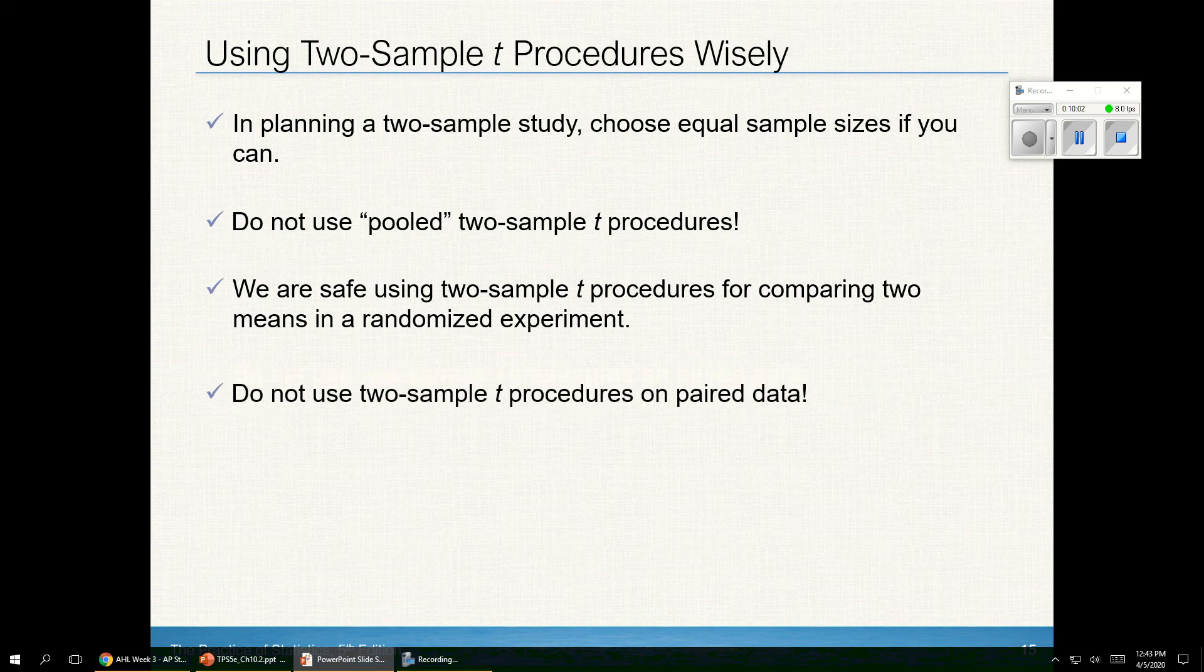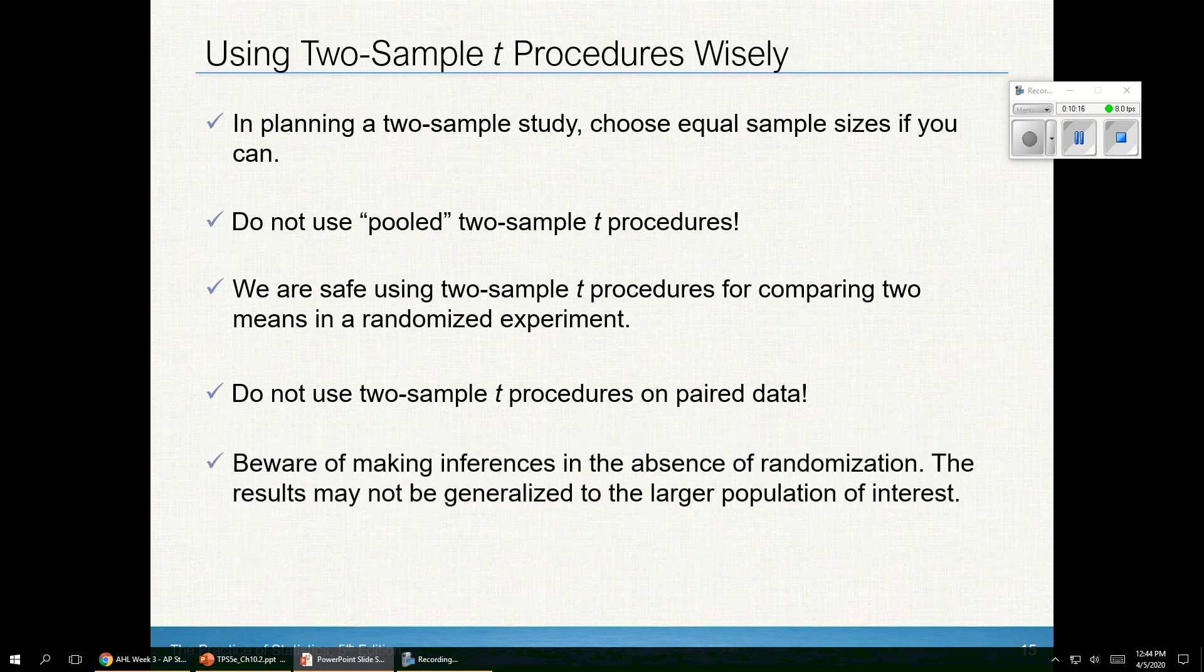We don't use two-sample t procedures on paired data. If the data is paired, then my two samples are not independent. If my samples are paired, then they're not independent, so I don't do two-sample procedures. Beware of making inferences in the absence of randomization. Remember, if we don't randomize, we don't know that our results are generally applicable to the larger population.